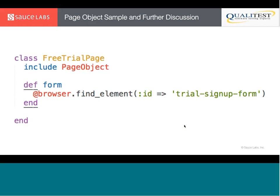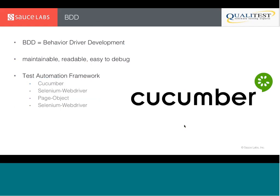Now let's talk about Page Object and BDD. BDD is Behavior-Driven Development, a TDD technique where you define the acceptance criteria and write the test as you're writing the source code. It has enabled us to create better tools for testing, such as Cucumber and RSpec. Today we'll be demonstrating tests in Cucumber using Selenium WebDriver, Page Object, and Sauce. The output of BDD will be maintainable, readable, easy-to-use test cases.